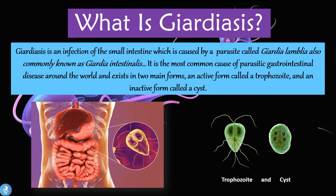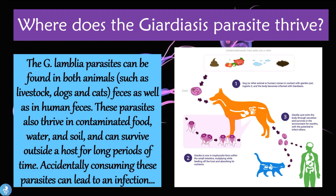Now let's take a closer look at where this parasite comes from. The G. lamblia parasite can be found in both animals such as livestock, dogs and cats, as well as in human feces. These parasites also thrive in contaminated food, water and soil, and can survive outside a host for long periods of time. Accidentally consuming these parasites can lead to an infection.